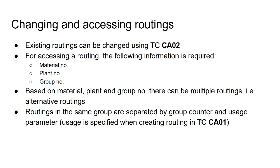However, there can be various alternate routings even when using the same set of information. If multiple alternate routings show up, you can distinguish them and find the correct routing by looking at the group counters or counter index, but also the usage parameter. The usage parameter is specified when creating the routing in transaction code CA01. You can go back to my previous video for an explanation of the usage parameter.